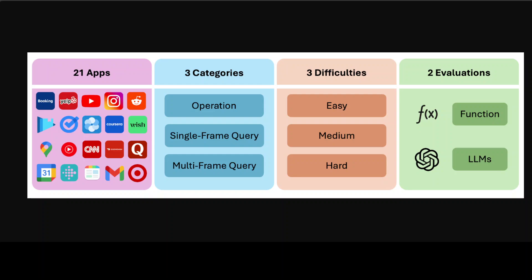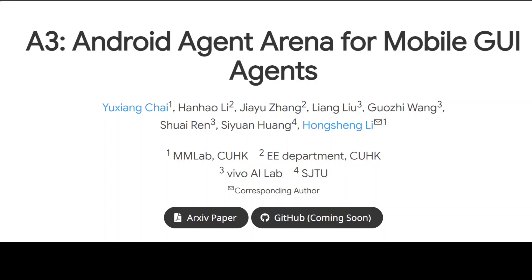It is quite evident that A3 is something really very useful because it integrates more than 200 tasks across 21 mainstream apps. It also enables compatibility with agents trained on any dataset, allowing for a more comprehensive evaluation for mobile GUI agents. Additionally, it leverages business-level LLMs to automate task evaluation, significantly reducing the need for human intervention and manual coding. Once the code is released I'm going to revisit it and present a demo as soon as I can, so stay tuned. Thank you very much.